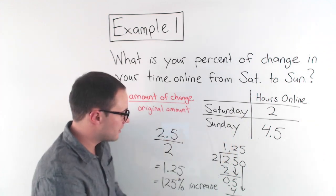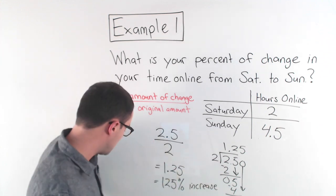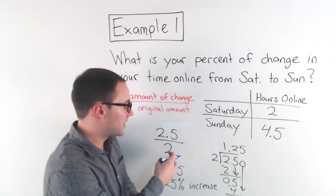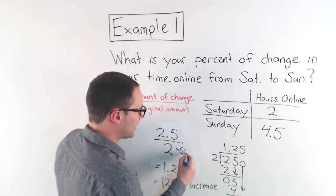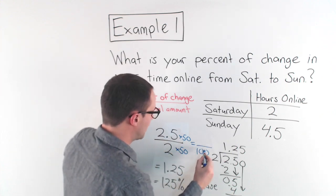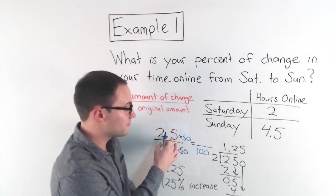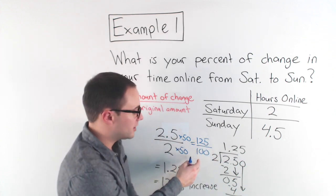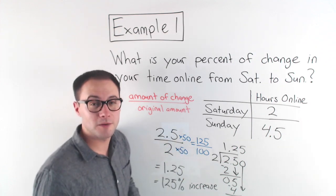You might also notice you didn't have to divide like that. If we have a fraction and we can get the denominator to 100, it's easy to convert to a percent. If we multiply the numerator and denominator by 50, the denominator becomes 100. 2.5 times 50: 2 times 50 is 100, and 0.5 times 50 is 25, so that's 125. So 125 over 100 is 125 percent.